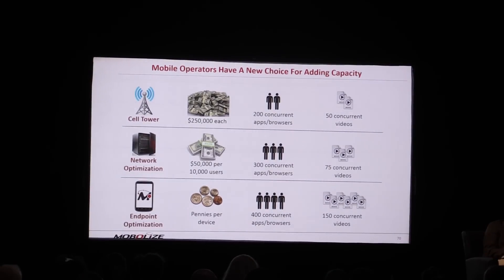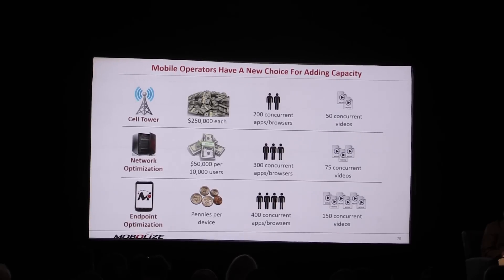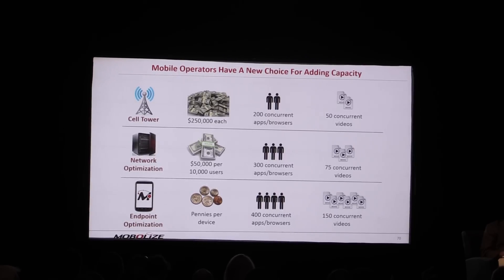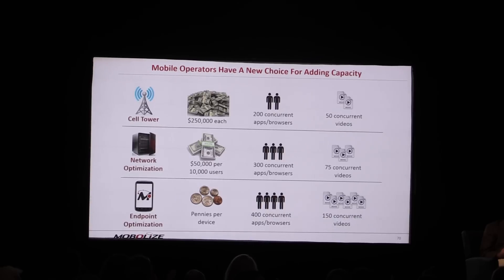One of the things about mobile endpoint optimization with a simple app is that we can change the time it takes to deploy a solution. Instead of the two to three years it takes to deploy additional cell sites, add carriers on existing sites, or build out network-based infrastructure, you can drop this in an MR within a month or two and be deployed out to your user base at scale.